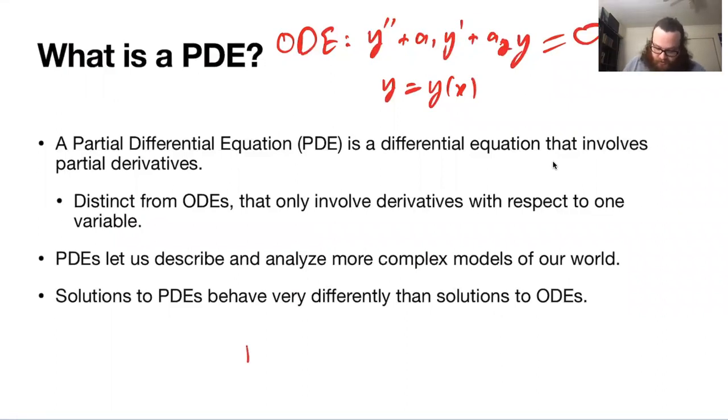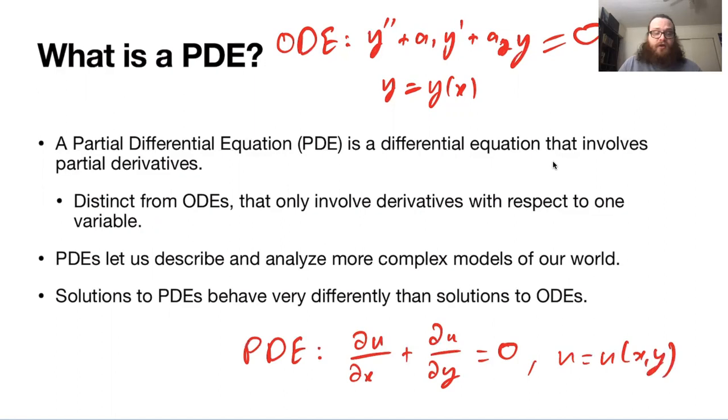PDEs, on the other hand, are going to involve things like ∂u/∂x + ∂u/∂y = 0, where in this case u is going to be a function of both x and y. So the fact that our functions incorporate more than just a single variable, that's what makes them partial differential equations.